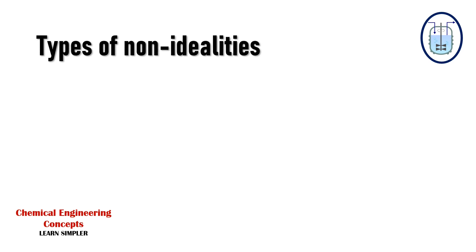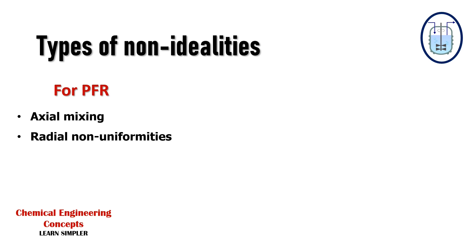Understanding the history of molecules inside the reactor — that is, the residence time distribution — is very important. In an ideal PFR there is no axial mixing; any back mixing introduced is a non-ideality. Radial concentration must also be uniform, and non-uniformities represent non-ideal behavior. Additionally, there can be dead spaces in corners or the lower part of the tubular reactor, and channeling can occur inside a PFR.